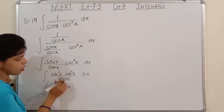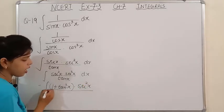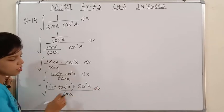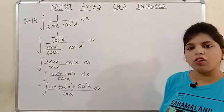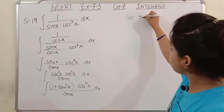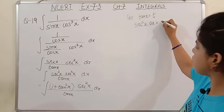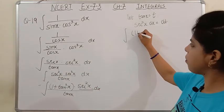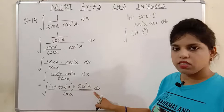So we have one part in function form and its derivative sec²x dx alongside. Now I just need to substitute the value of tan x = t. So let tan x = t. Differentiating both sides: sec²x dx = dt. Substituting: (1 + tan²x) · sec²x dx becomes (1 + t²) dt, upon the value of tan x which is t.